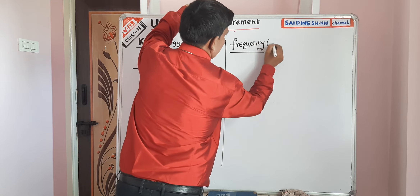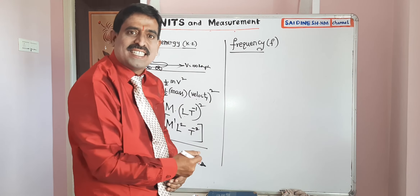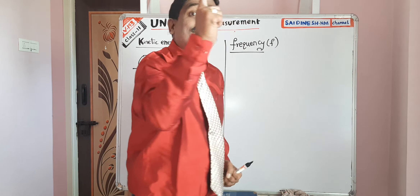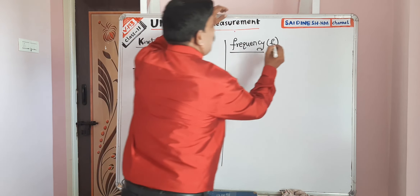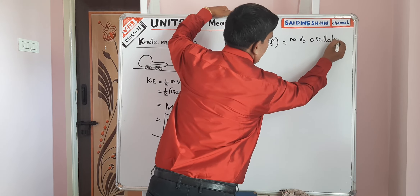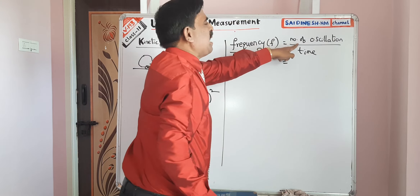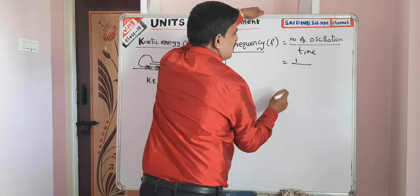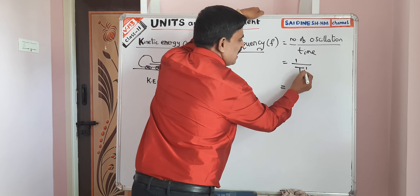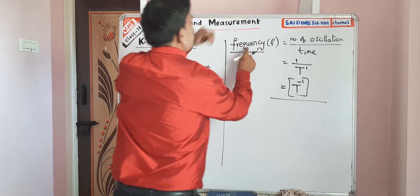Frequency means the number of oscillations in one second. A simple pendulum oscillating to and fro — the number of oscillations per second is frequency. Frequency equals number of oscillations divided by time. Number is dimensionless (no dimensional formula). Time dimensional formula T power 1. T comes to numerator giving T power minus 1. This is the dimensional formula for frequency: T power minus 1.